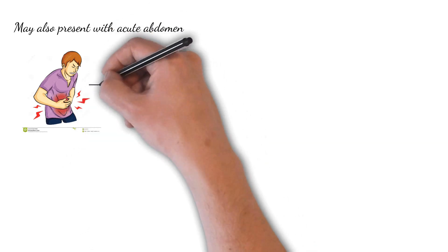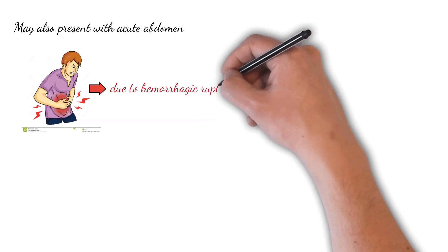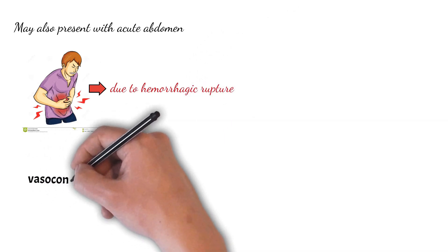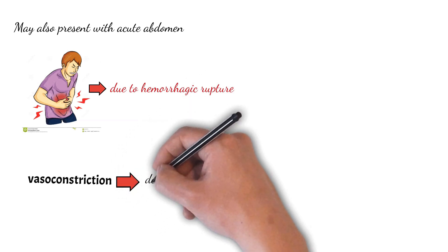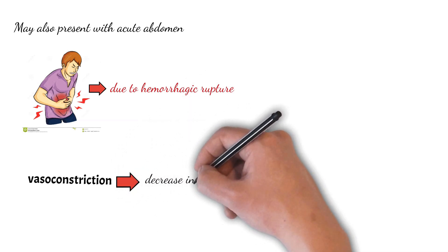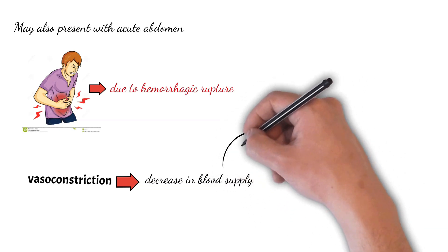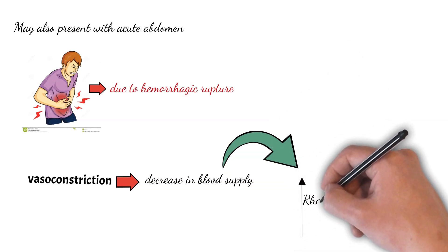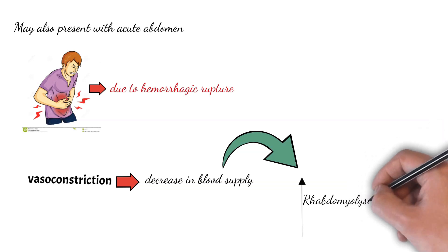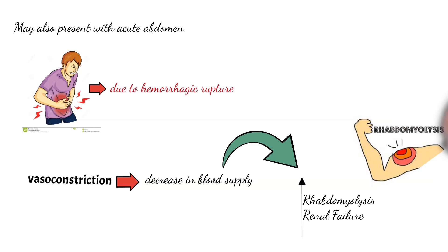Sometimes the patient may also present with acute abdomen, which occurs due to hemorrhagic rupture of the tumor. Because of vasoconstriction leading to decreased blood supply, there will be increased risk of rhabdomyolysis and renal failure, so chances of renal failure are also present along with heart failure.